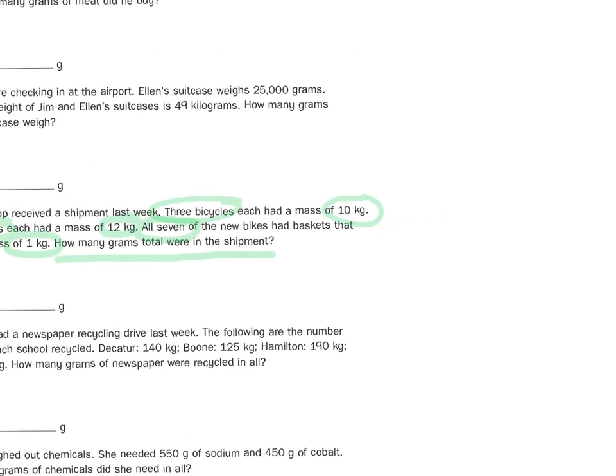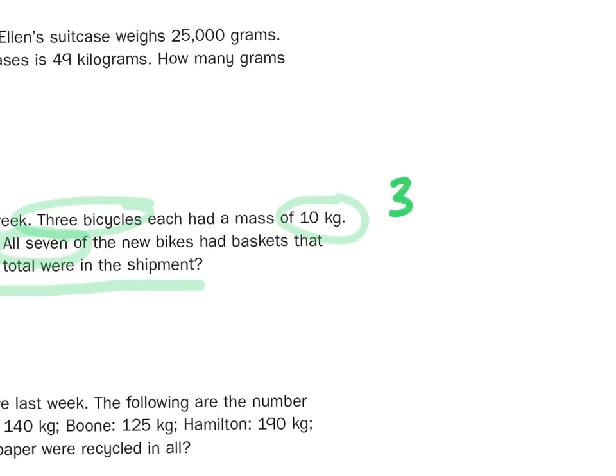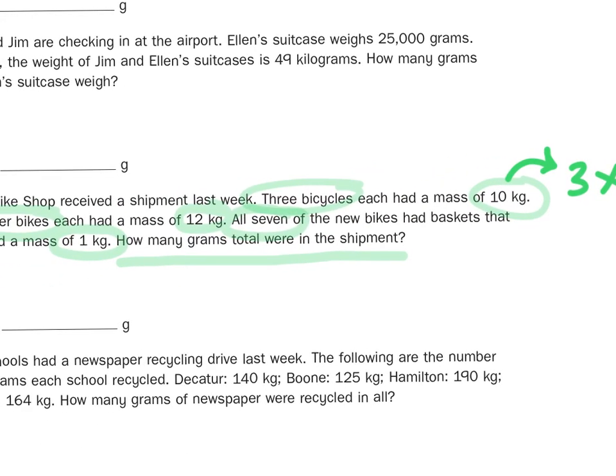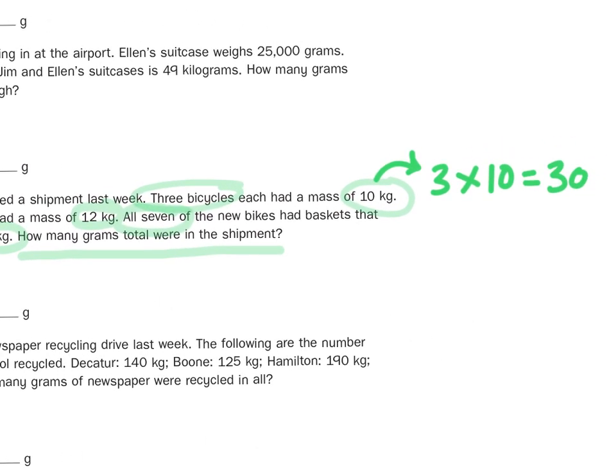Let's start with breaking this down. Coming up with our action plan, we first need to know what is the mass of 3 bikes at 10 kilograms. Well, 3 times 10, of course, is 30. So that gives us one part there. Then we have 4 bikes at 12 kilograms. And of course, 4 times 12 is 48. Then we have 7 baskets, each coming in at 1 kilogram. So 7 times 1, of course, is 7.